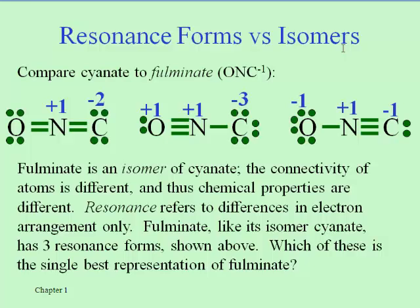And if you recognize that word, it has to do with explosives because this is one unstable set of atoms here. It's an isomer of the cyanate we saw before because notice the nitrogen's in the middle, not the carbon. So if we change the sequence of atoms, we've got a different substance. But fulminate, like the cyanate, does have three resonance forms.